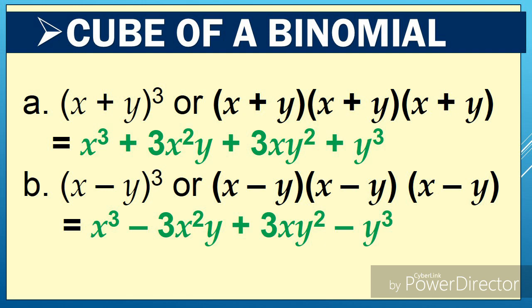How do we find the product of cube of a binomial? The product of a cube of a binomial consists of four terms. Let's observe two patterns. The cube of x plus y becomes x plus y times x plus y times x plus y, and it is equal to x cube plus 3x squared y plus 3xy squared plus y cube. The second pattern is the cube of x minus y, which means you multiply x minus y three times, and the product is x cube minus 3x squared y plus 3xy squared minus y cube.